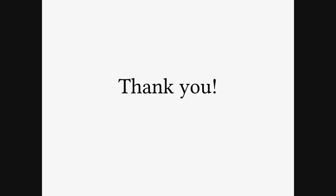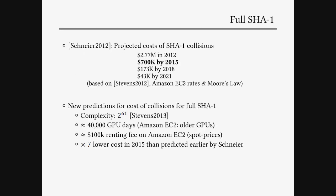Question: Can you just clarify something? This estimate of $700,000 — is it for 2 to the 80 computations? Answer: The 700K from Schneier? Yes. Schneier's estimation in 2012 is based on an attack cost of 2 to the power of 60, actually. Questioner: Okay, I was assuming it was brute force. Thank you very much.